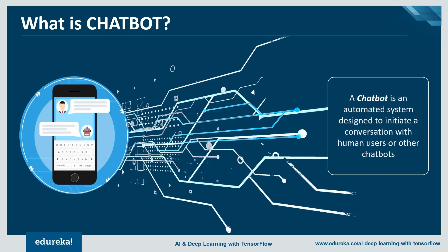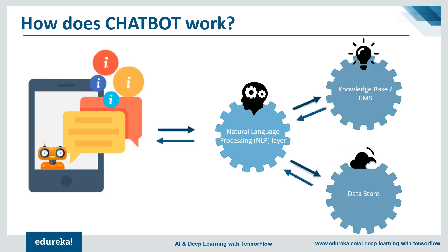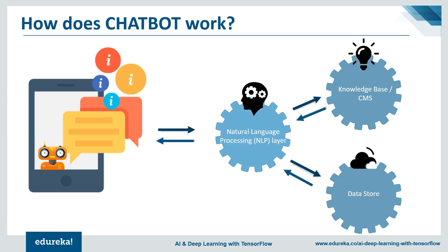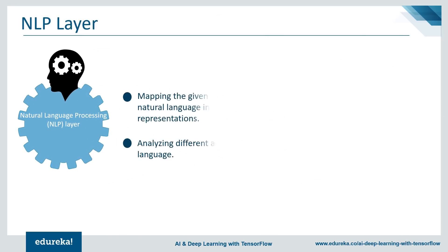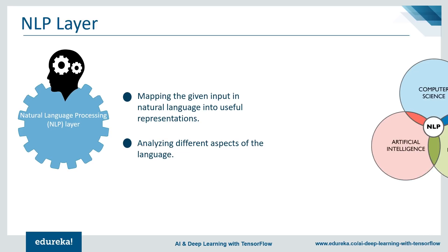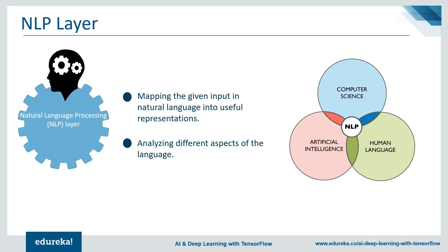A chatbot is an assistant or an automated system that communicates with us through text messages. It integrates into websites, applications, or instant messengers and helps entrepreneurs get closer to customers. Now let's look at the steps involved in the working of a chatbot. The first step is to convert the user's text or speech into structured data in order to find related answers. Some of the natural language processing steps include sentiment analysis, tokenization, normalization, and dependency parsing.